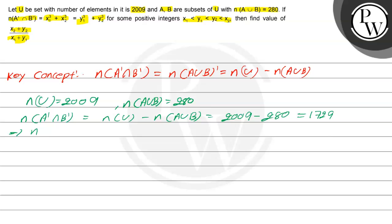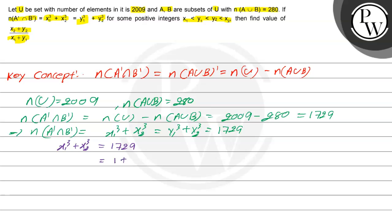So n(A'∩B') = x1^q + x2^q = 1729. Now 1729 can be written as 1 + 1728, that is 1³ + 12³. So comparing with x1^q + x2^q, we get x1 = 1 and x2 = 12.